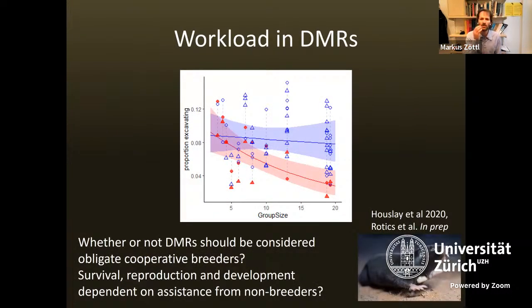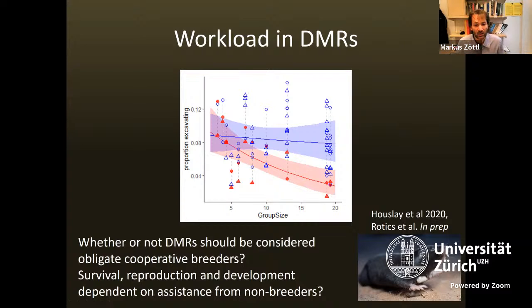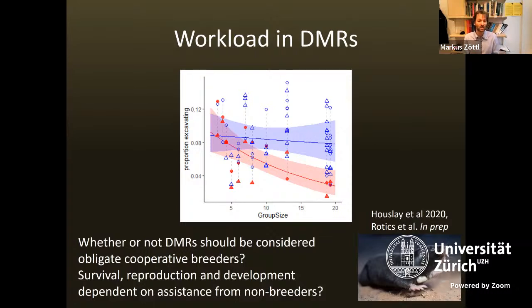We also examined cooperative borrowing investment in relation to group size. For non-reproductive individuals, the effect of group size was not very strong — we don't find a strong reduction in workload in larger groups for helpers. But for breeders, we do see that breeders in large groups work less hard than breeders in small groups. This raises questions about the benefits of living in large groups and whether Damaraland mole rats rely on helpers for excavating — whether they should be considered obligate cooperative breeders.